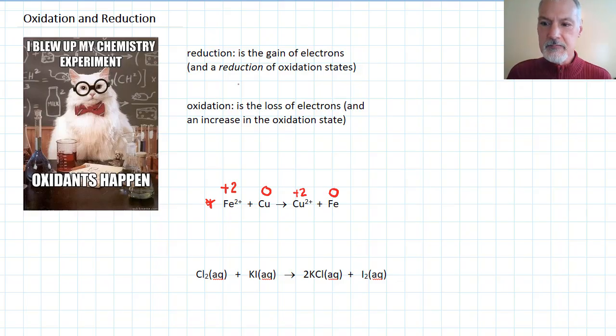Now, we define reduction as the gain of electrons. So, moving from one side to the other side, which side gained electrons? Well, we can see that iron with a plus 2 oxidation state, in order to obtain a zero charge, this must have undergone a gain of electrons. We would say it's been reduced, which is our second definition. It's a reduction in the oxidation state.